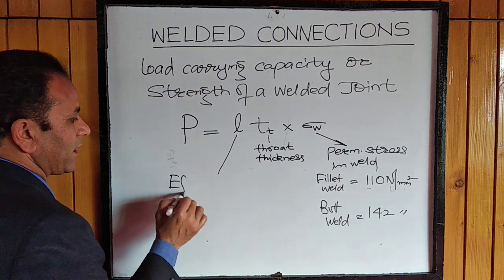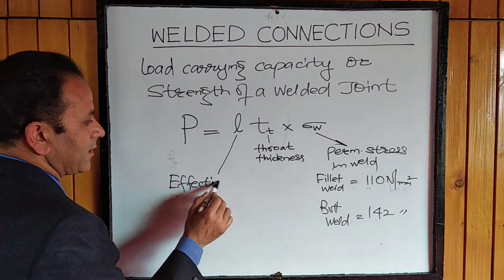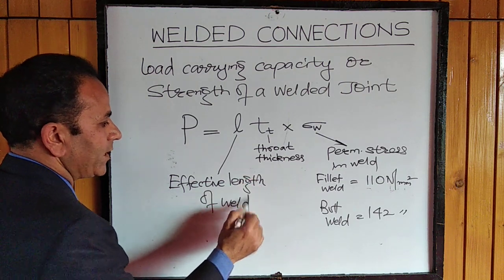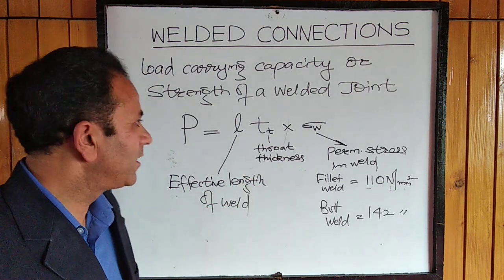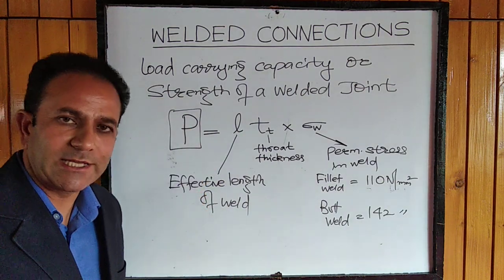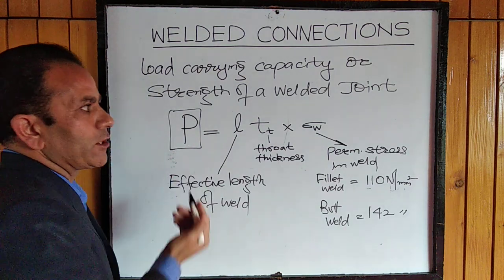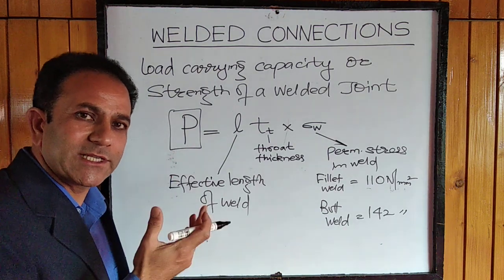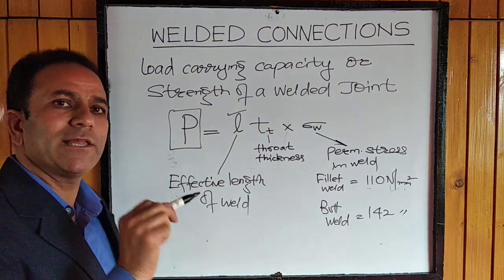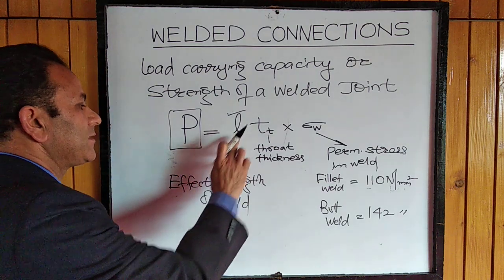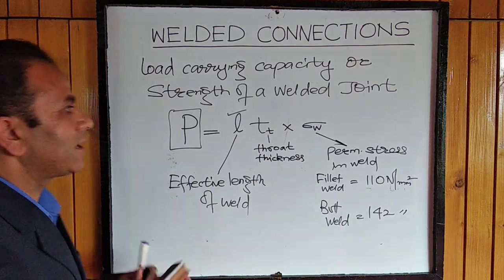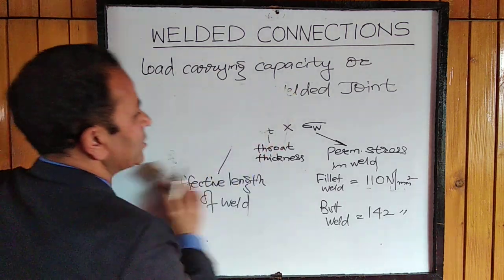L is the effective length of the weld — how much length we are providing. This is the load that a weld can carry. Normally we have already designed the member for a particular load; we design the joint for the same load. So we calculate this length and provide it so that the load carrying capacity of the joint equals the load carrying capacity of the member.